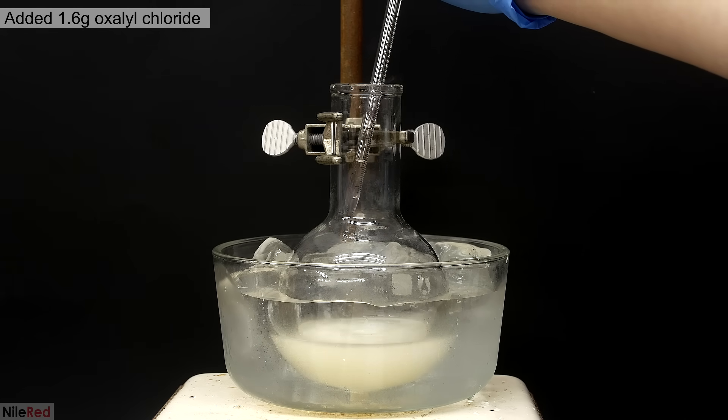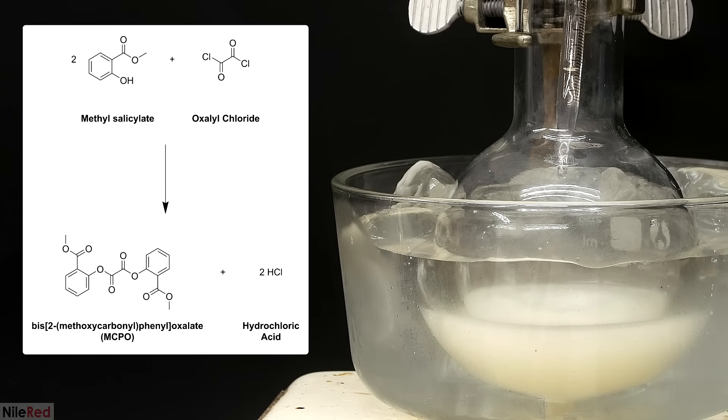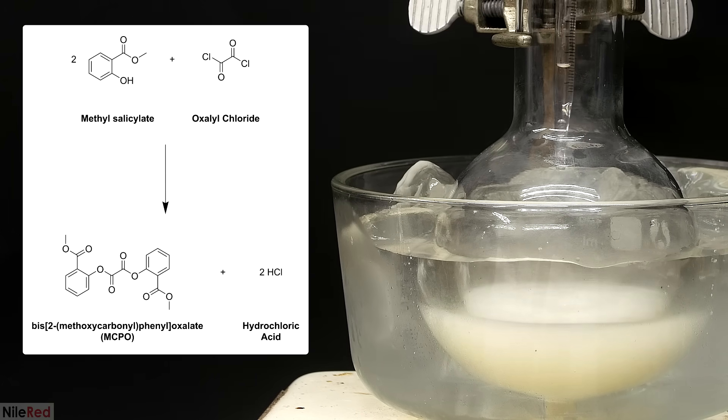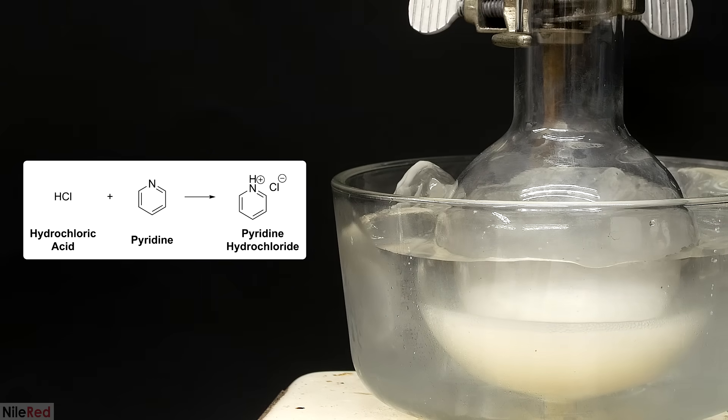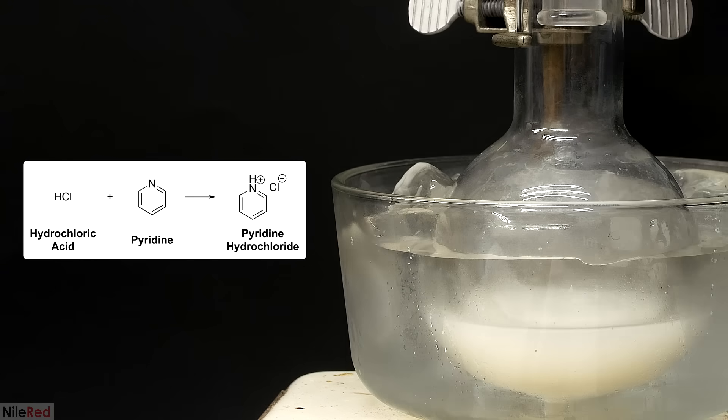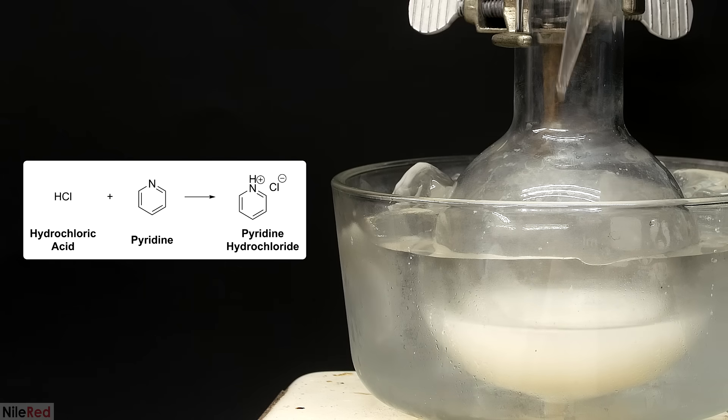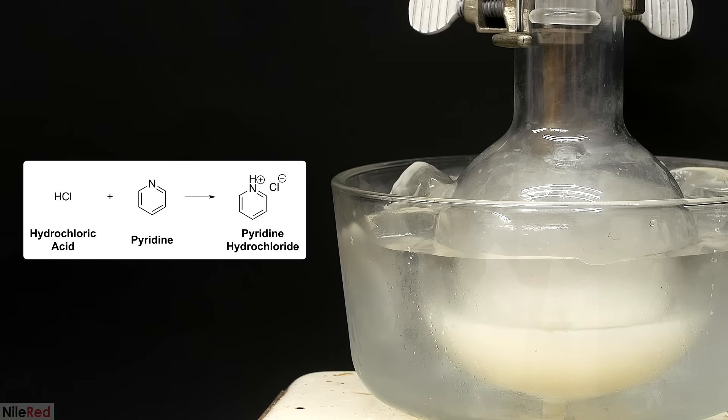The reaction that we're doing here is between one molecule of oxalyl chloride and two molecules of wintergreen. They combine together to form the product that we want, which is called MCPO, but it also produces hydrochloric acid. The acid doesn't exist for very long, and it's quickly picked up by the pyridine, which is basic. They react together to form pyridine hydrochloride, which is all the white solid that's forming. The actual desired product, MCPO, is soluble in THF, so it stays in solution.